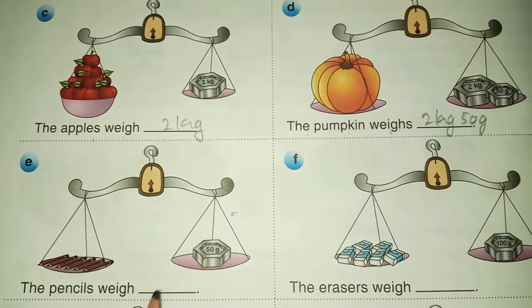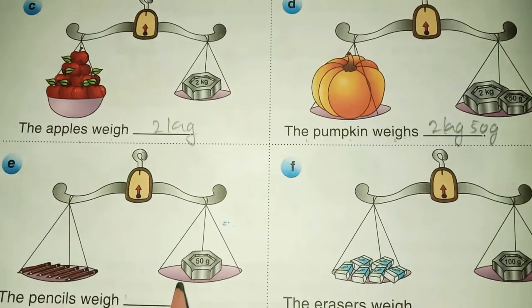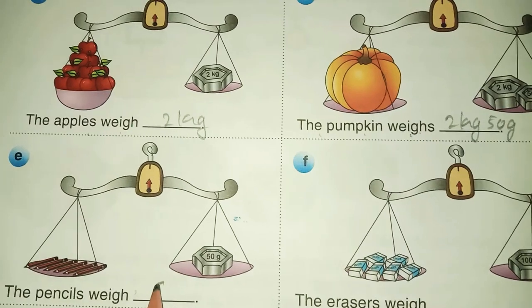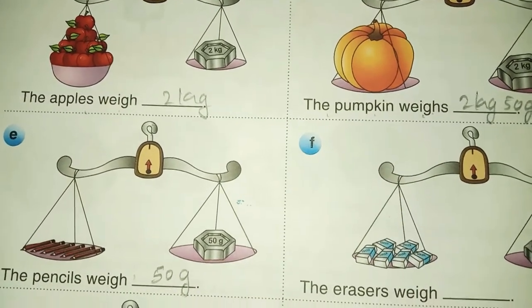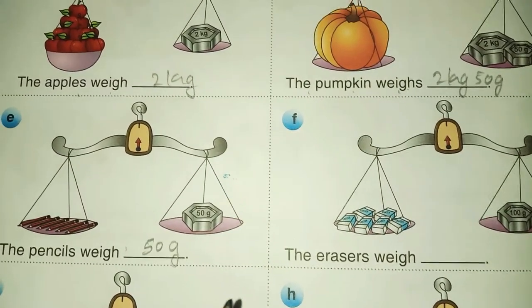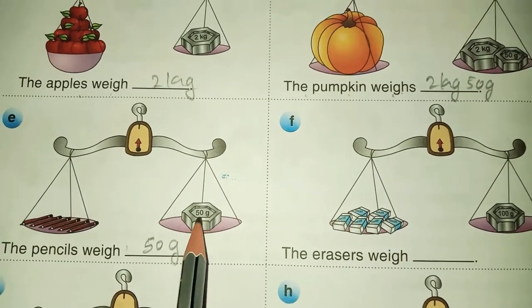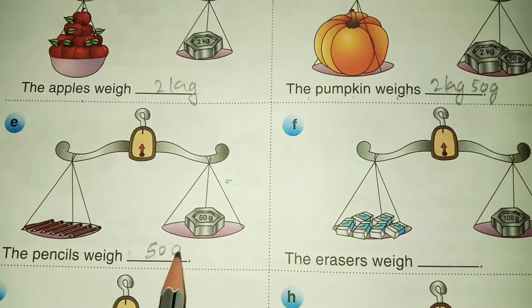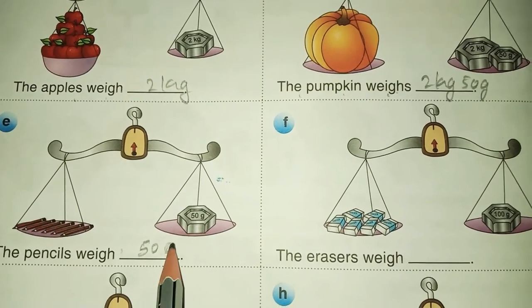And the pencils weigh 50 gram. 1000 gram is equal to 1 kg. It means this is only 50 gram, not 50 kg. 50 gram. Write G here.